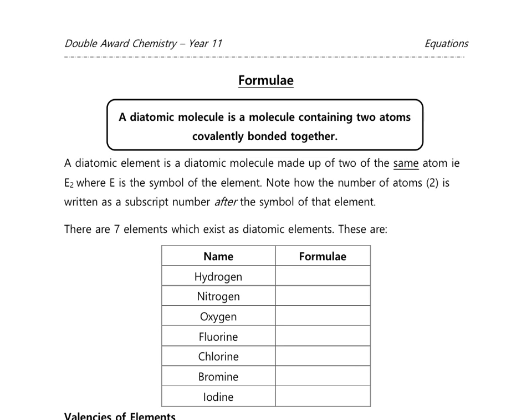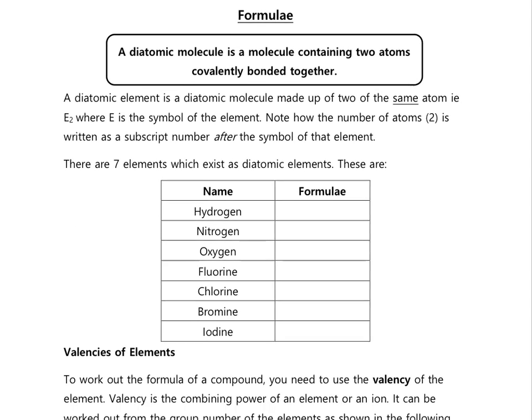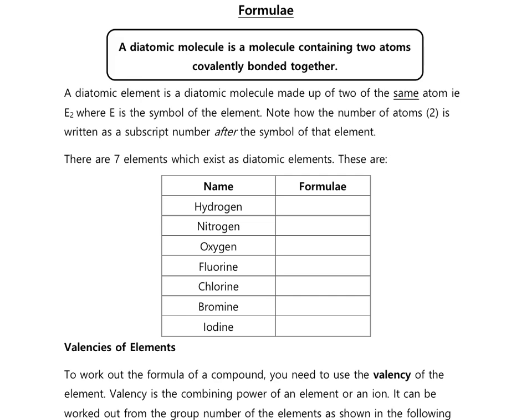We're going to do a bit of work on finding the formula of different substances. The first part we start with is our diatomic elements. It's really important to set this out from the start because any time you see these elements in an equation on their own, you have to write them as a diatomic formula. What that means is that each of these seven elements exists as two atoms covalently bonded together.